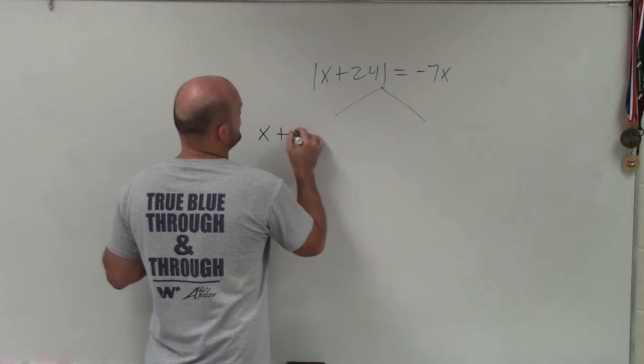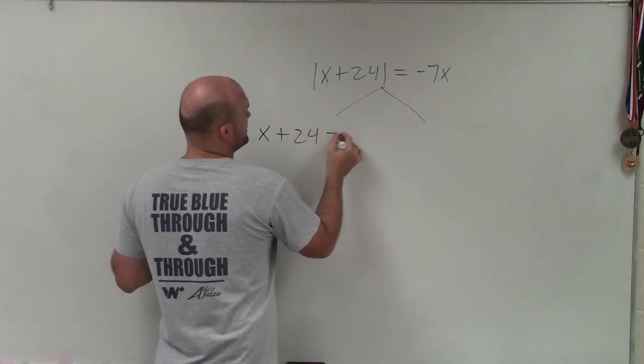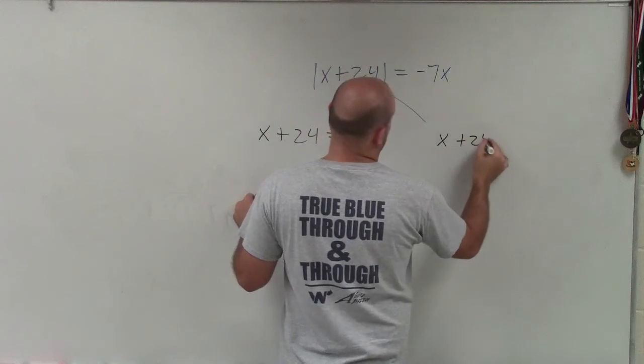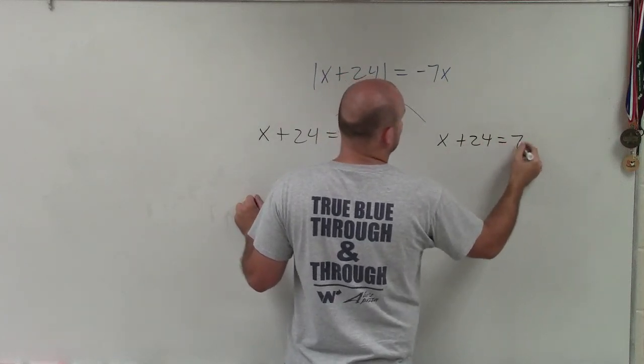So to do that, we'll set up two equations. x plus 24 is equal to negative 7x, and the opposite, x plus 24 is equal to a positive 7x.